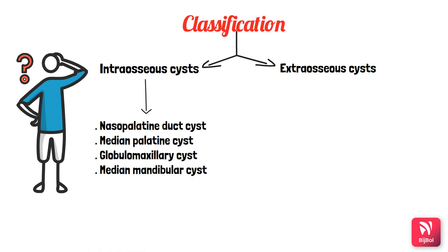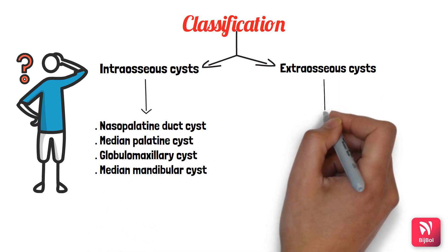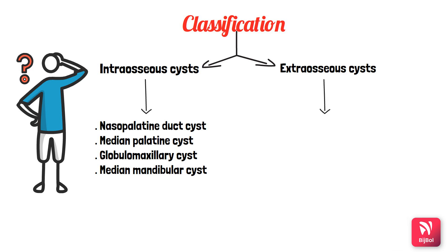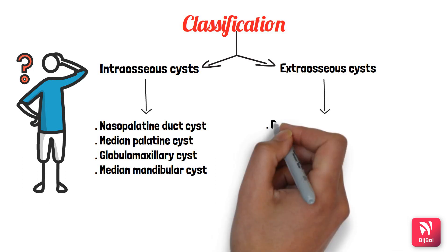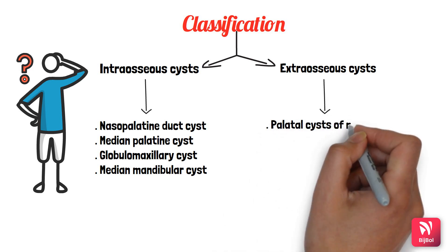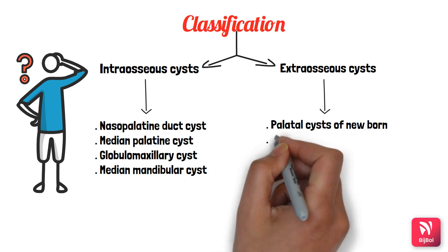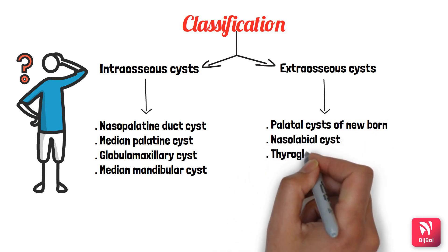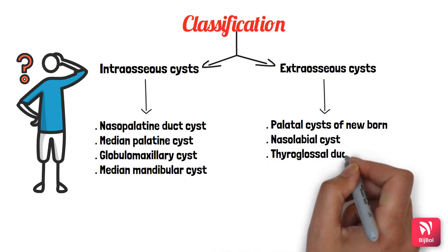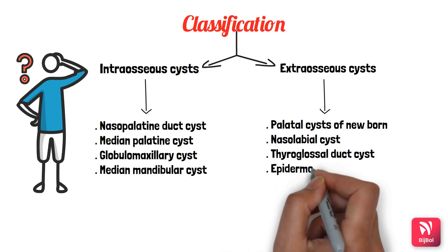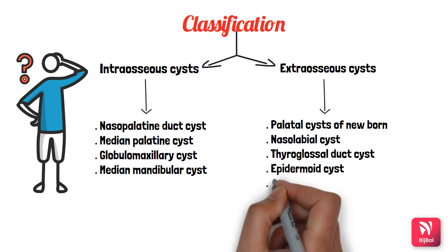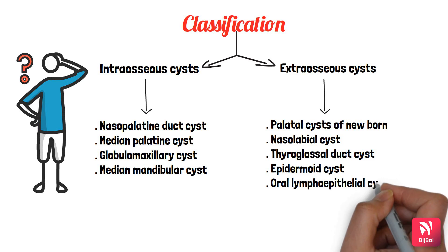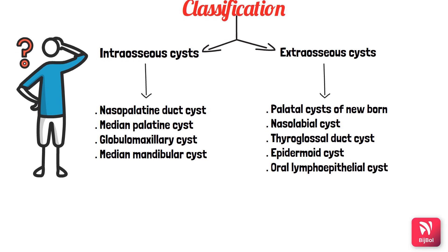Under extraosseous cysts, or soft tissue cysts, we have palatal cysts of the newborn, nasolabial cysts, thyroglossal duct cysts, oral lymphoepithelial cysts, and epidermoid cysts. Now let us go into detail of each cyst.